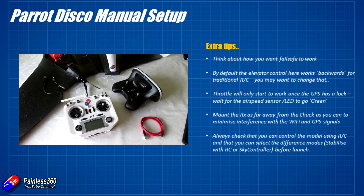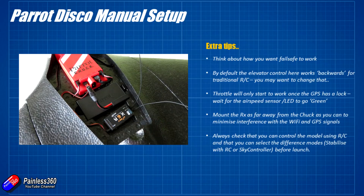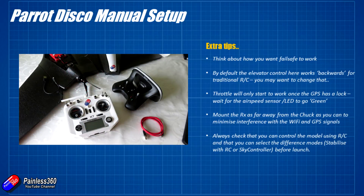Be aware the throttle will not become active — you won't be able to arm the craft — until you have GPS lock. So wait for the airspeed sensor LED at the front to go green. The flight process and pre-flight checks are exactly the same as before; you need that GPS lock. Personally I'd probably launch using the sky controller and then take control with the radio once it's up, but this gives you the choice. Mount the receiver as far from the Chuck as possible to avoid interference with GPS and the Wi-Fi antennas in the foam sending back your FPV signal. Finally, before you fly, double check that you can change modes with the three-position switch.